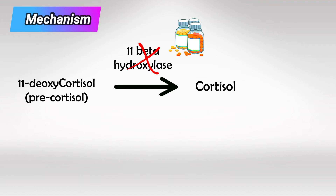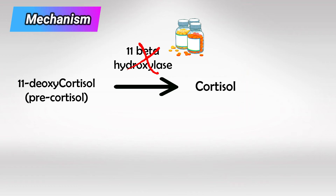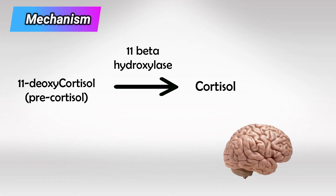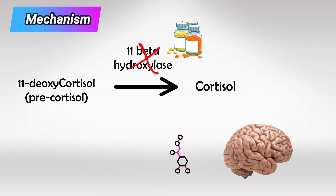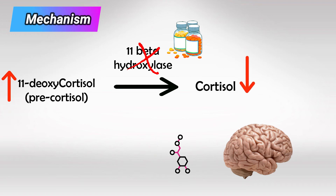In a normal patient with intact hypothalamus-pituitary-adrenal axis, blocking this enzyme will result in increasing levels of 11-deoxycortisol with decreasing levels of cortisol. The pituitary gland will sense that the cortisol level is low, and it will compensate by increasing ACTH in an effort to increase cortisol. So, if we use metyrapone in a normal patient, we'll have increasing ACTH and 11-deoxycortisol with low cortisol.